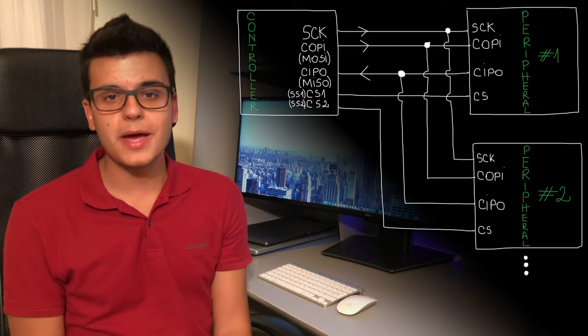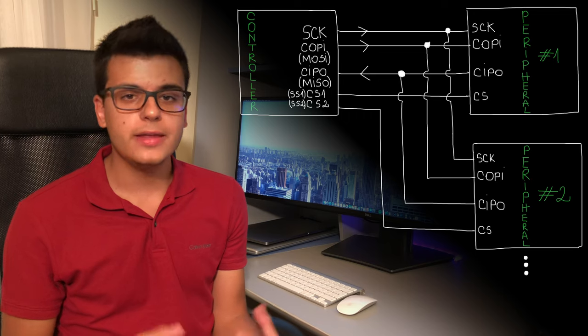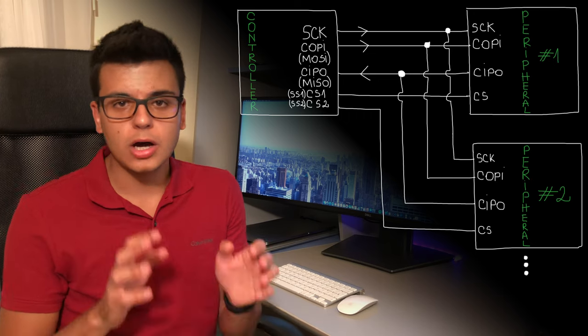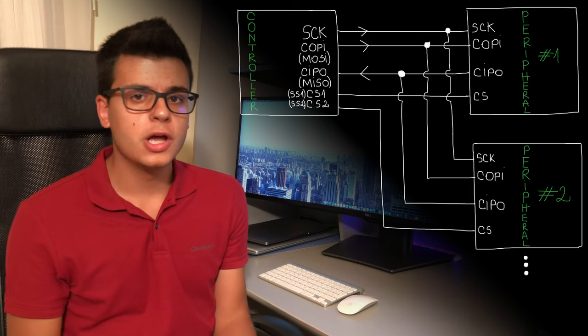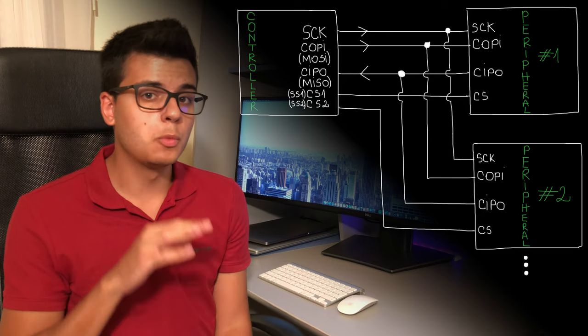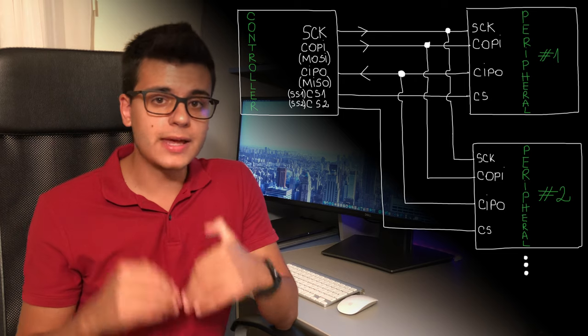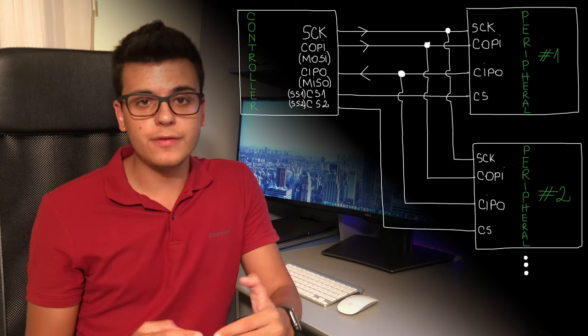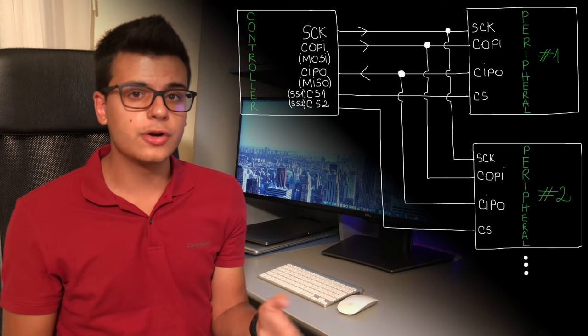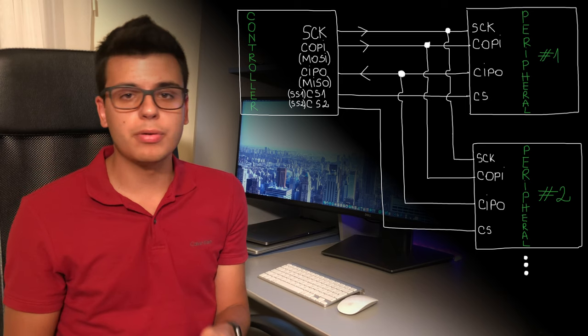The controller signals which device it's talking to through a dedicated signal per peripheral called SS or CS, which stands for Chip Select. Before starting a data transfer, the controller selects the target peripheral by pulling its CS line to logical zero. As shown in the schematic, the two data lines can be shared among all peripherals thanks to these chip select lines. Besides this independent peripheral approach, there is also daisy chaining, where data lines connect from one peripheral to the next — though daisy chaining is rarely used in practice.